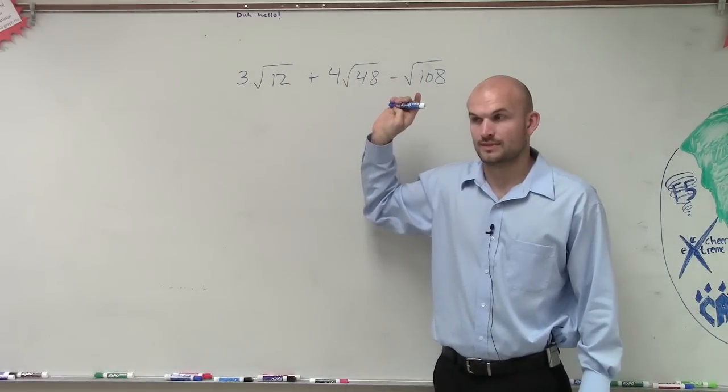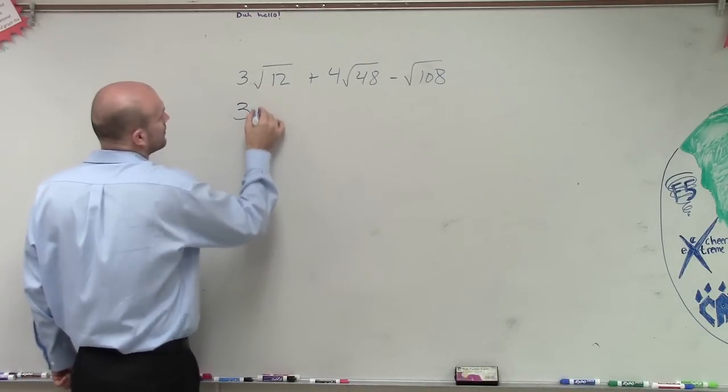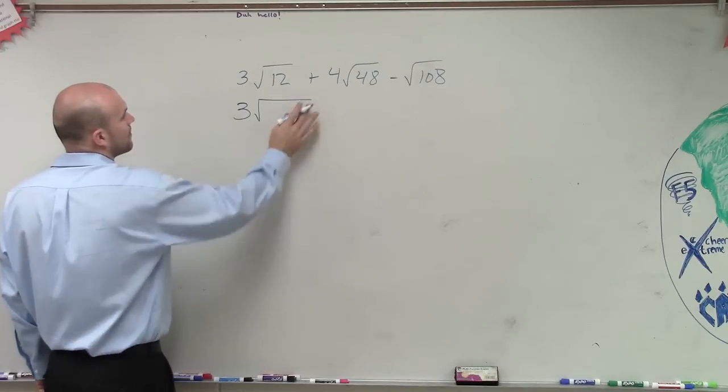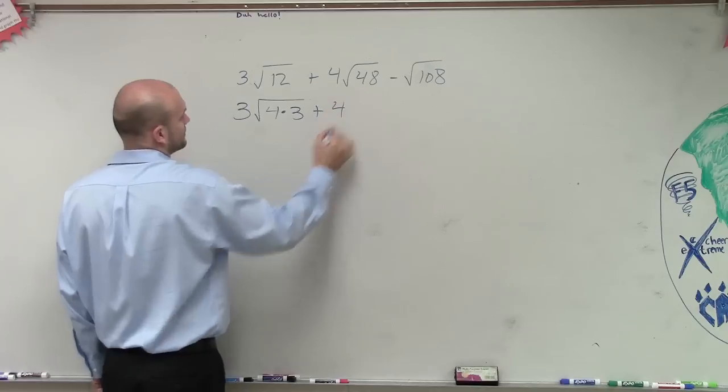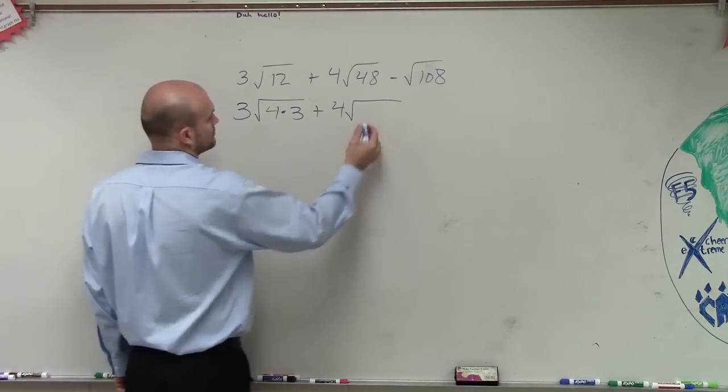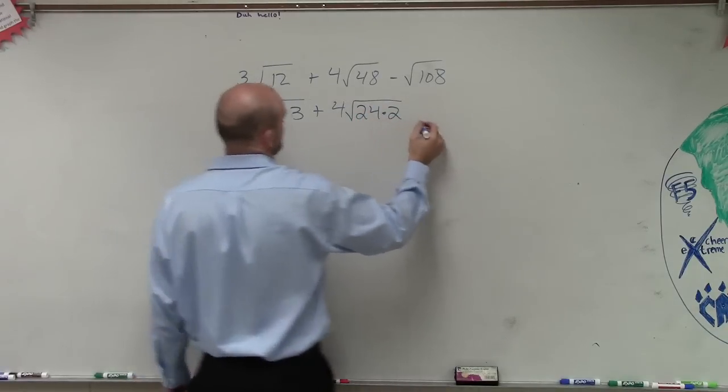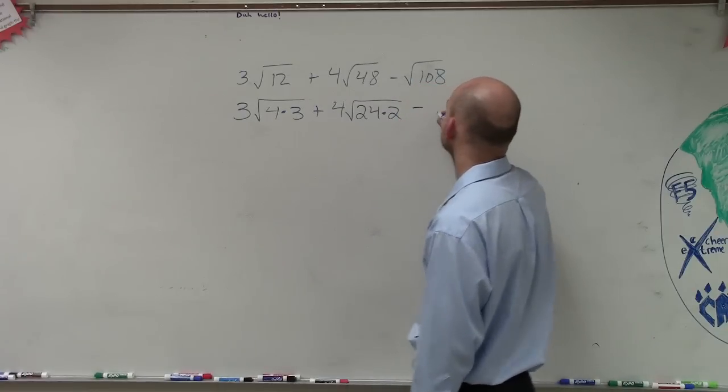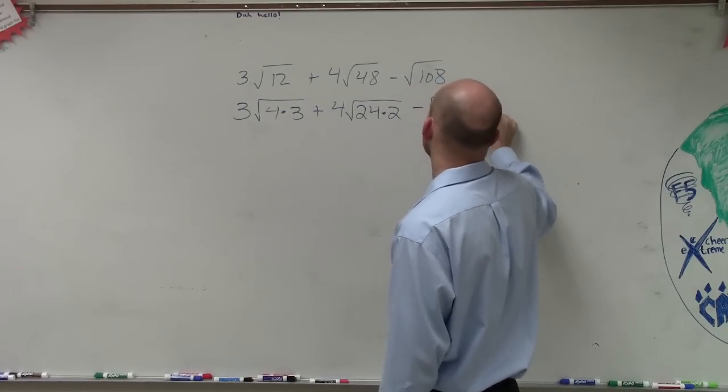Can I tell you what I can write so I can see if I got it? Sure. All right. So you're going to do 3, and then inside the parentheses, square root of 4 times 3. And then you're going to do 4, and inside the parentheses, you're going to do square root of 24 times 2. And then you're going to do in parentheses, 36 times 3.